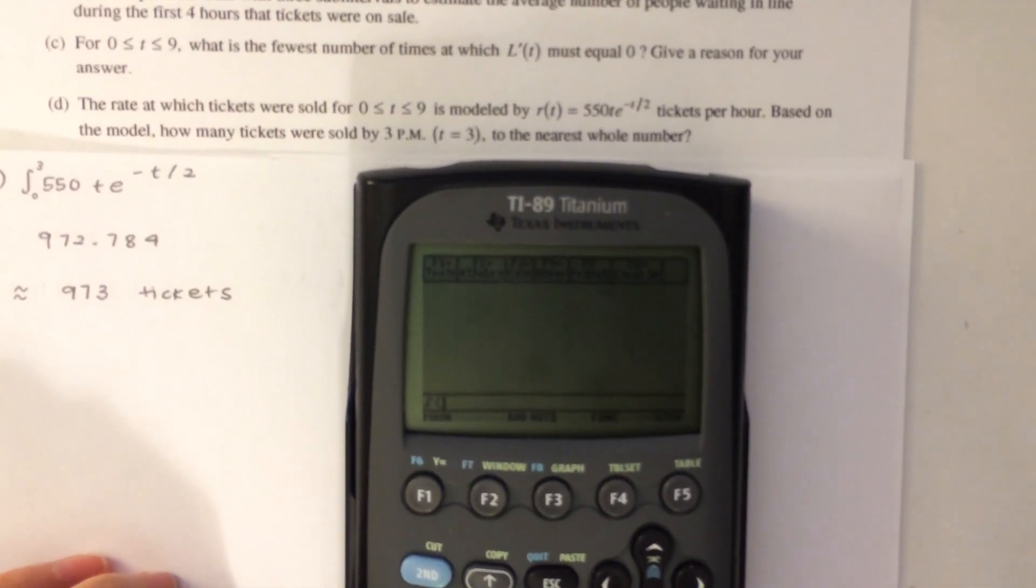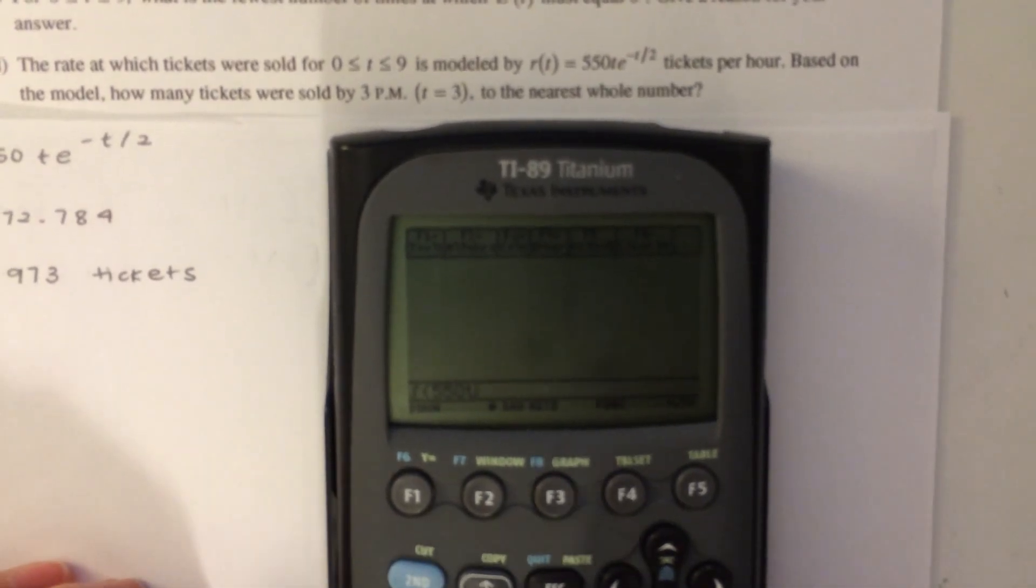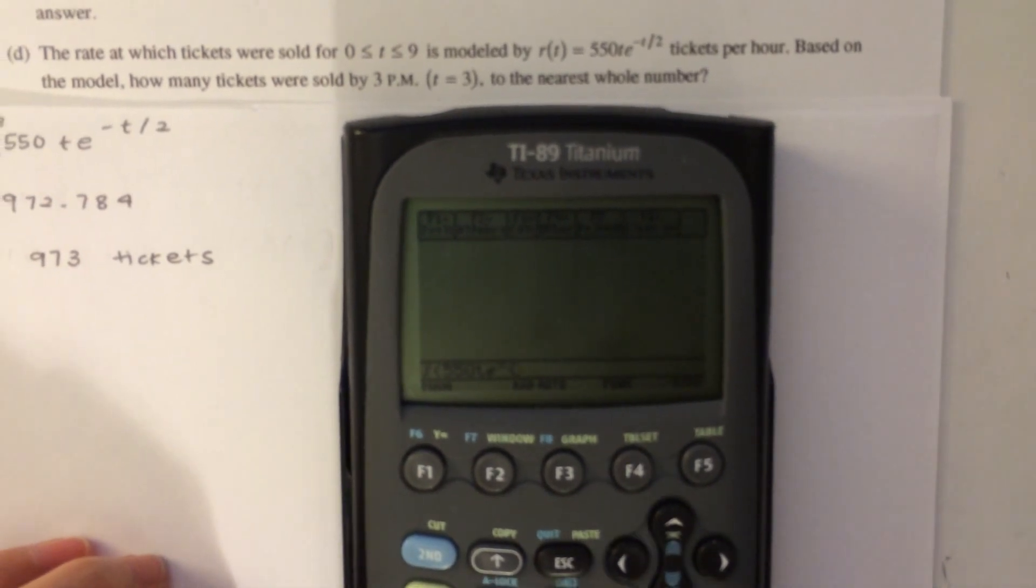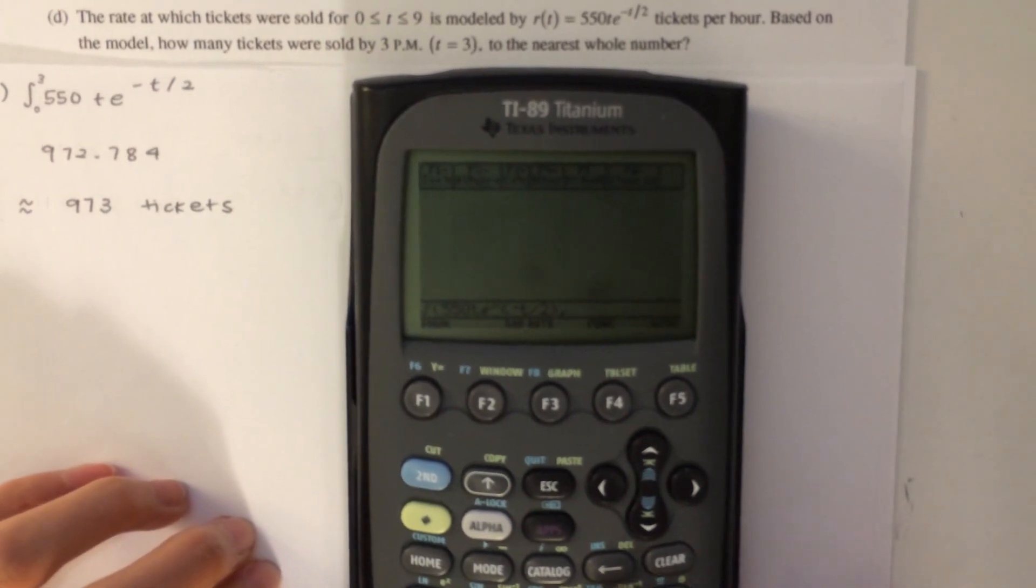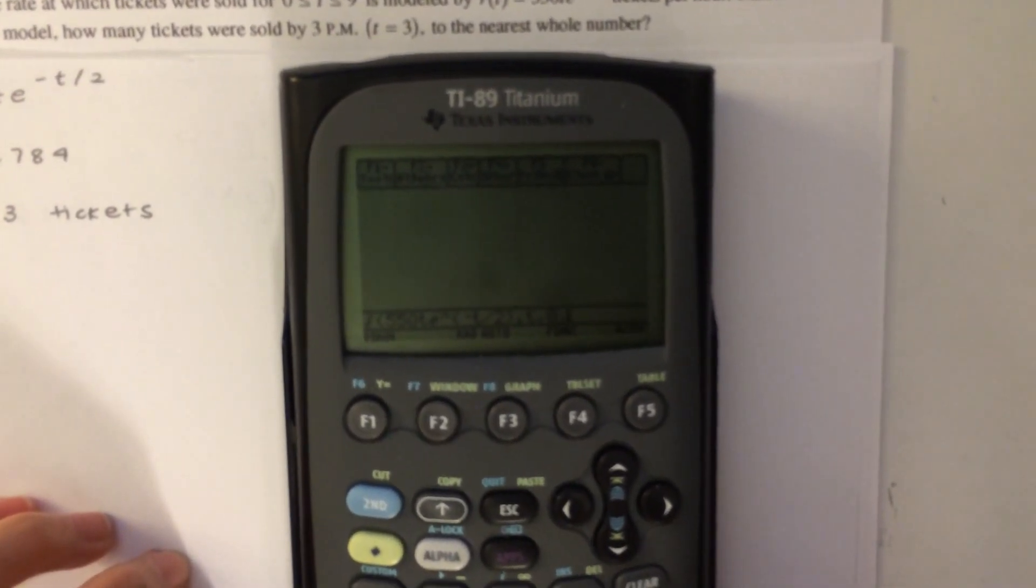and we input the function 550 t e to the negative t over 2. And then comma our variable and our interval, 0 to 3.